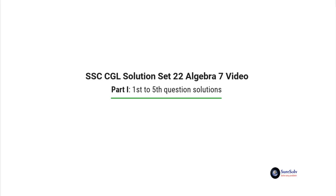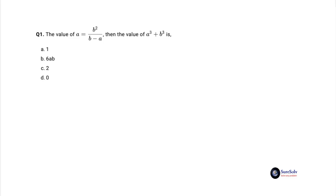Let's solve the first problem. Question 1 is: the value of a equals b squared by b minus a, then the value of a cubed plus b cubed is, option a: 1, option b: 6ab, option c: 2, and option d: 0.